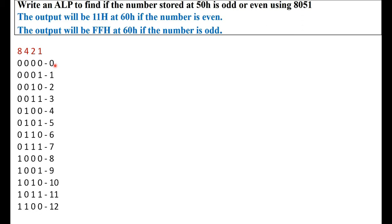Similarly, the least significant bit of an odd number will always be 1. So we have understood that if the least significant bit is 0, the given number is even, and if the least significant bit is 1, the given number is odd.